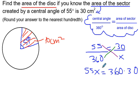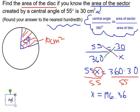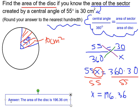To find x, divide both sides by 55. So x equals 360 times 30 divided by 55, which gives 196.36. When they ask you to find the area of the disk, your answer is: the area of the disk is 196.36 centimeters squared. Hope you're going to have fun practicing with parts of circles — area of sectors or arcs. Have fun!